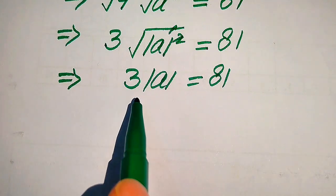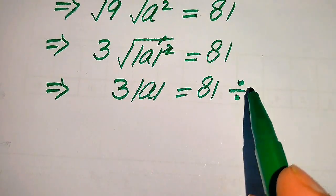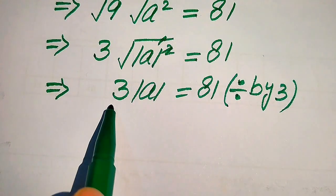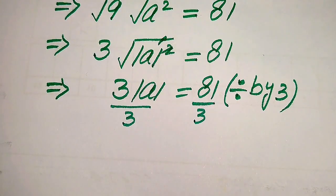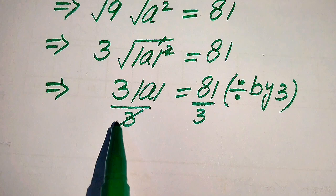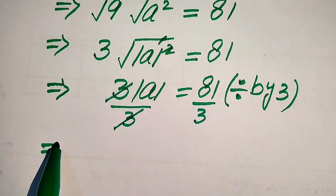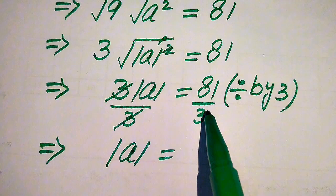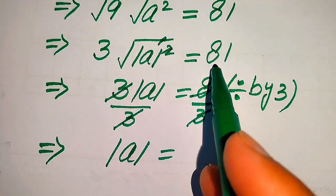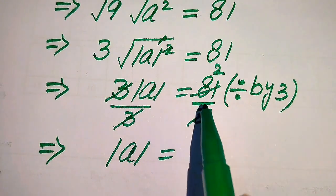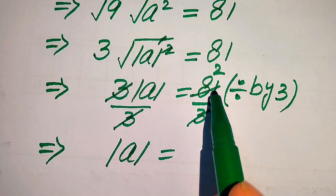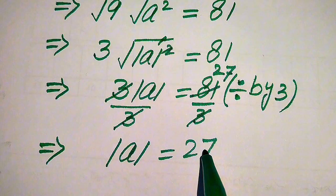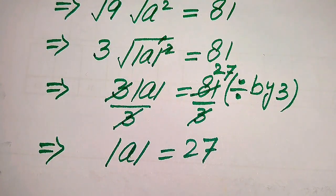Now, in order to find the value of a, we need to divide both sides by 3. When we divide both sides by 3, the 3 cancels out, and we will get |a| equals to 81 divided by 3. Three times 2 becomes 6, carry 2, it becomes 21, and 3 sevens are 21 — so we get |a| equals to 27.